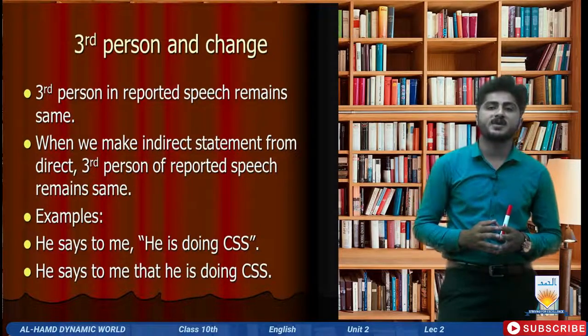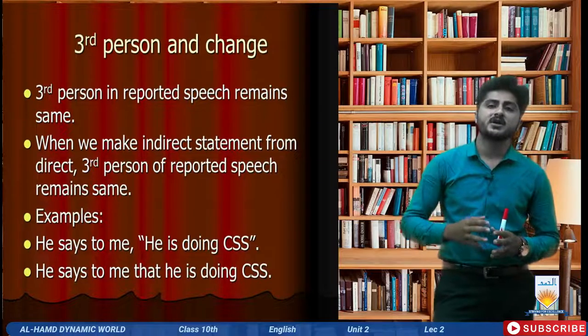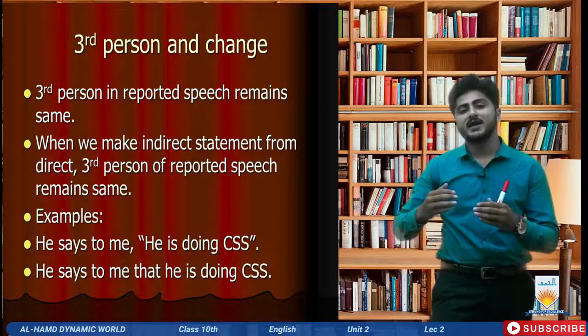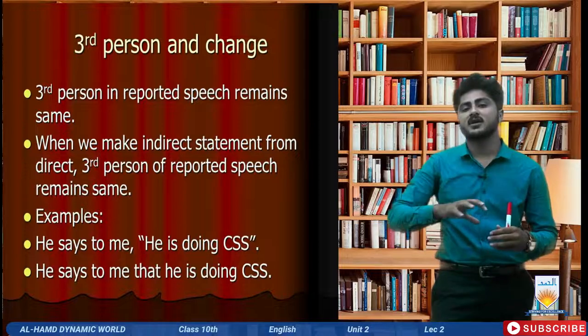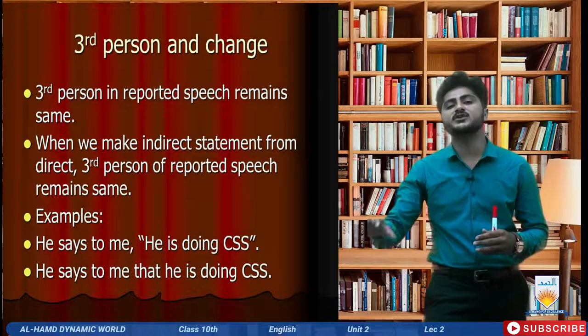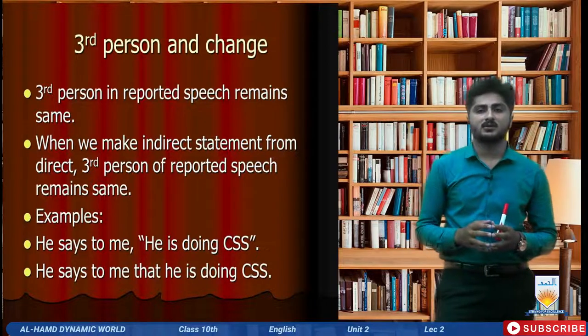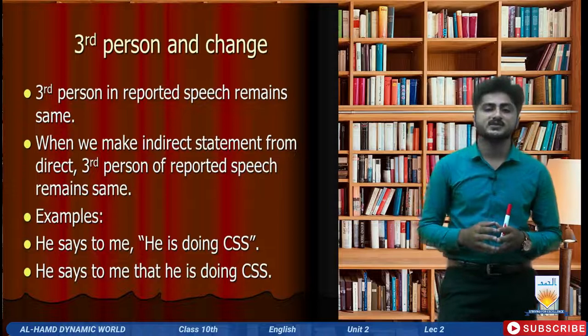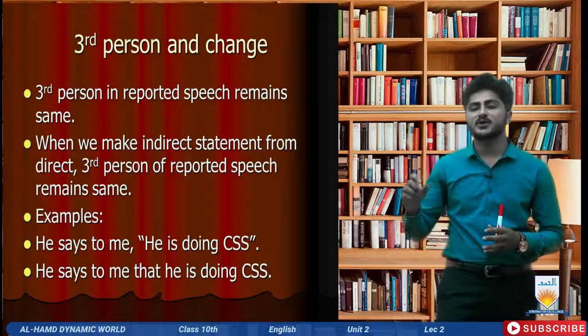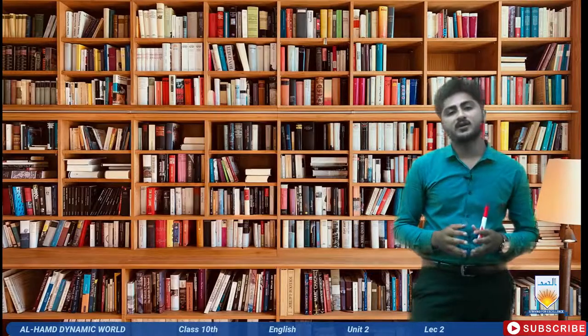Third person of reported speech always remains the same when we make indirect speech from direct speech. Unlike first person and second person, third person remains unchanged. For example: 'He says to me, he is doing CSS' becomes 'He says to me that he is doing CSS' — the third person pronoun 'he' does not change.